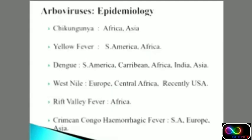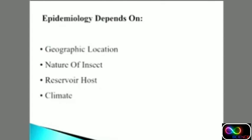Regarding arbovirus epidemiology: Chikungunya is common in Africa and Asian countries including India. Yellow Fever is found in South America and Africa — not a single case has occurred in India. Crimean-Congo Hemorrhagic Fever is found in Europe and Asia. Particular arboviral infections are geographically restricted due to factors such as geographical location, environmental conditions, the nature of the insect vector specific to that climate, reservoir host availability, and climate overall.